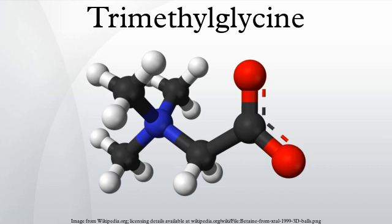The intermediate, betaine-aldehyde, is generated by the action of the enzyme mitochondrial choline oxidase. Betaine-aldehyde is further oxidized in the mitochondria in mice to betaine by the enzyme betaine-aldehyde dehydrogenase. In humans, betaine-aldehyde activity is performed by a nonspecific cytosolic aldehyde dehydrogenase enzyme.